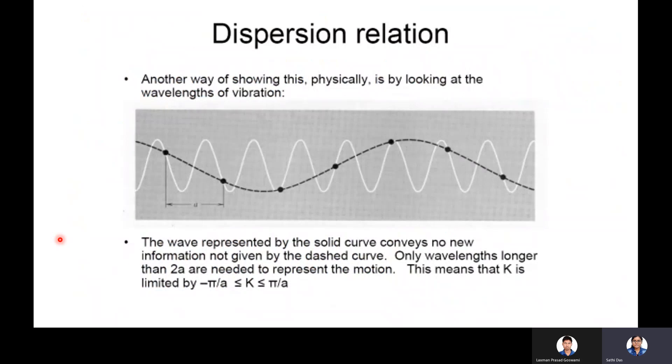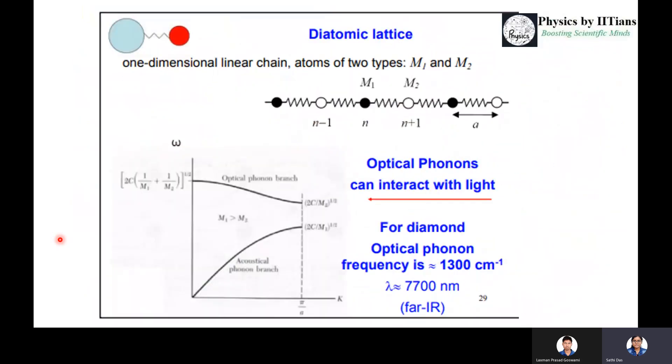We discussed the one-dimensional monoatomic dispersion relationship. In this case, we shall discuss about the lattice which is diatomic in nature. What is the difference between monoatomic and diatomic lattice? Monoatomic lattice consists of a single type or one type of atoms, but the diatomic lattice consists of two different types of atoms.